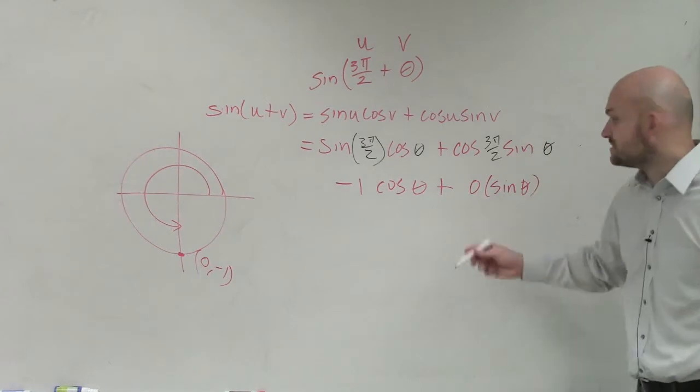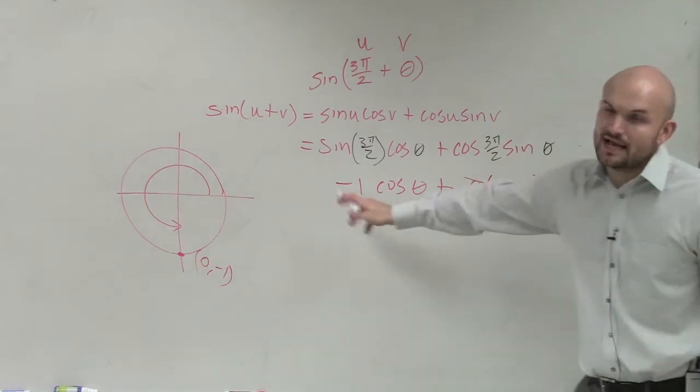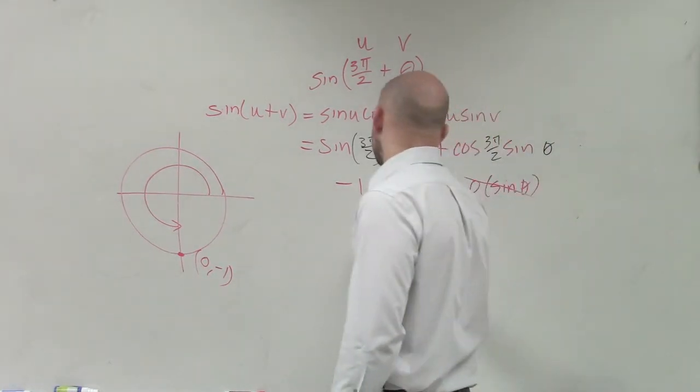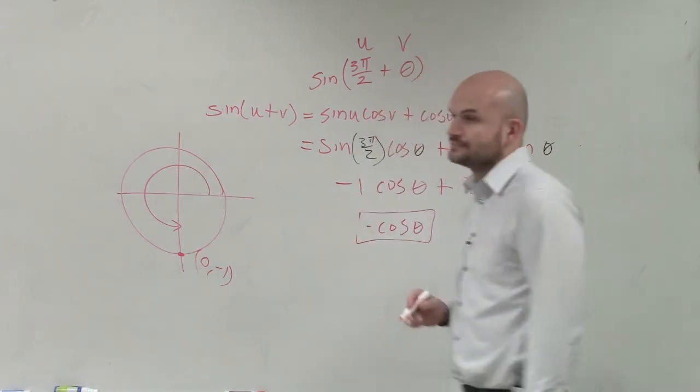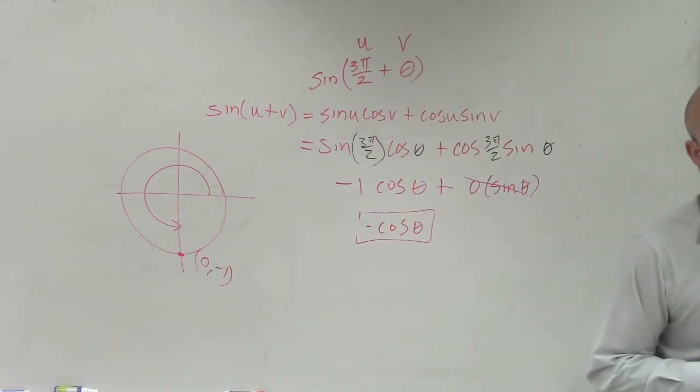Well, 0 times anything is 0. So negative 1 times cosine of θ is negative cosine of θ. Assuming you guys aren't going to need help on this, right?